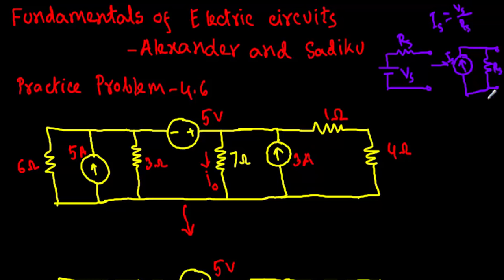The source current will be Is equal to Vs divided by Rs, and the resistance will have a value of Rs. Conversely, if we have a current source with a parallel resistor, I can convert that into a voltage source with a resistance in series, where Vs equals Is times Rs. So source transformation converts a voltage source with series resistance to a current source with parallel resistor, and vice versa.